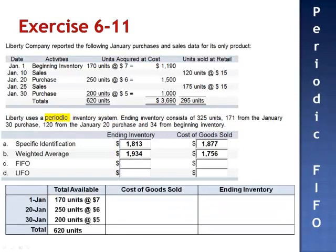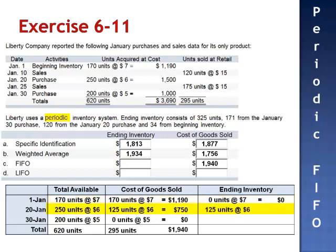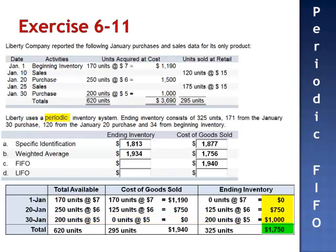Periodic FIFO assumes that the first items into the database are the first items out. Cost of goods sold is calculated at the end of the period — it is the first 295 units that we owned: 170 units at $7 per unit and 125 units at $6 per unit. Cost of goods sold equals 170 multiplied by $7, which is $1,190, plus 125 units multiplied by $6, which is $750. Cost of goods sold is $1,940. For ending inventory, we have 0 units from beginning inventory, 125 units from the January 20th purchase at $6, totaling $750, and all 200 units from January 30th at $5, totaling $1,000. The value of the 325 units in ending inventory is $1,750.